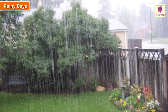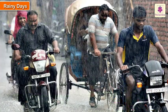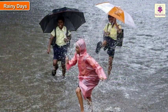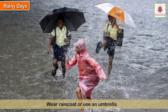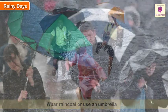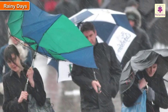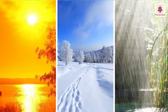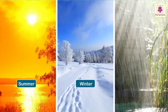On some days it rains. These days are called rainy days. At times the rain is heavy; at times it is light. When we go out, we either wear a raincoat or use an umbrella. Sometimes there is wind along with the rain, and the umbrella cannot protect us then.